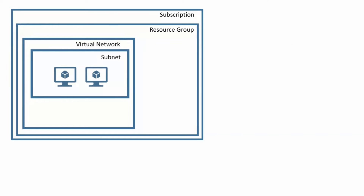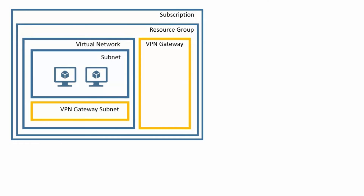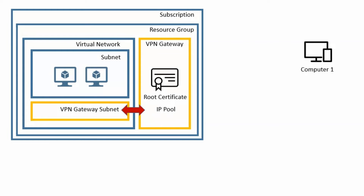Now let's see how we can connect this virtual network to a point or a site over the internet. To connect the virtual network with an external point or site, we require a VPN gateway. That VPN gateway will create a VPN gateway subnet inside the virtual network we are planning to connect. The VPN gateway contains a root certificate and an IP range to allocate addresses to external points. As given in the question, we have Computer1, which is available on a remote site and is already connected through this VPN gateway with a point-to-site connection.